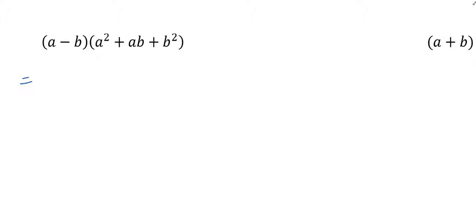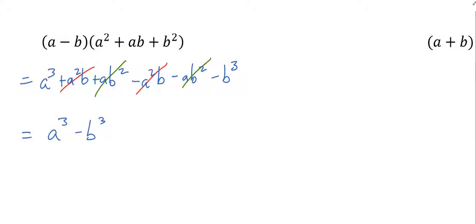What if we expand this, the general case: (a - b)(a² + ab + b²). a times a² is a³, a times ab is a²b, a times b² is ab². And I move on to the negative b: negative b times a² is minus a²b, negative b times ab is minus ab², and look the same thing happens—those are gone, those are gone, those are gone, and I'm left with a³ - b³.